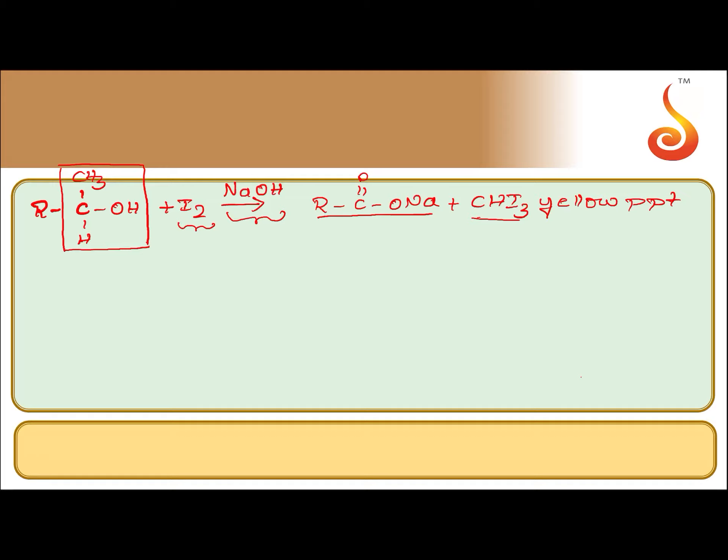In iodoform reaction, the alcohol is converted to the sodium salt of carboxylic acid having one carbon atom less. That missing carbon atom is what forms iodoform. Remember this for competitive exams: only alcohols having the CH3CHOH group give the iodoform reaction.